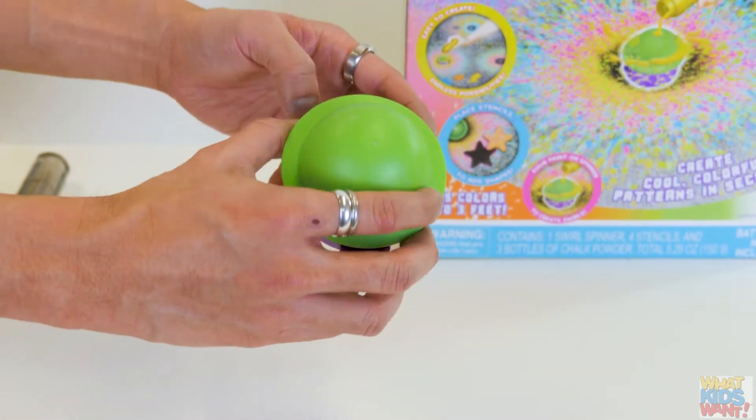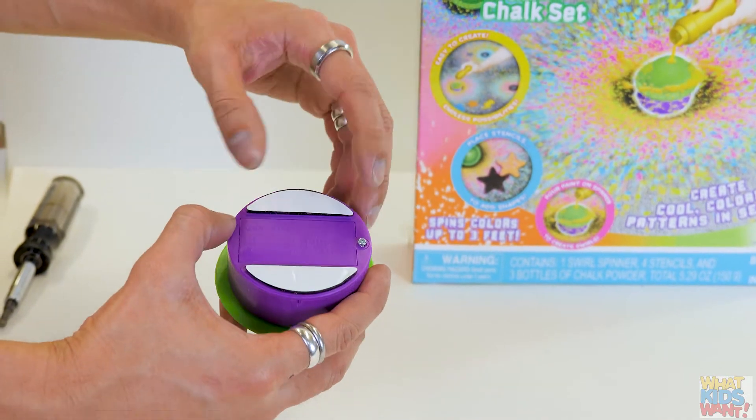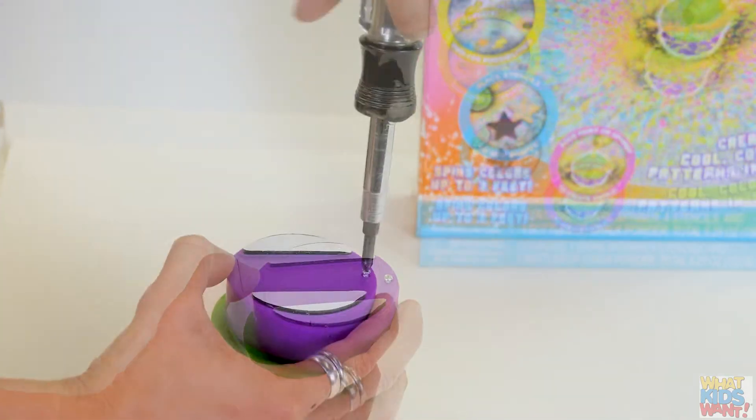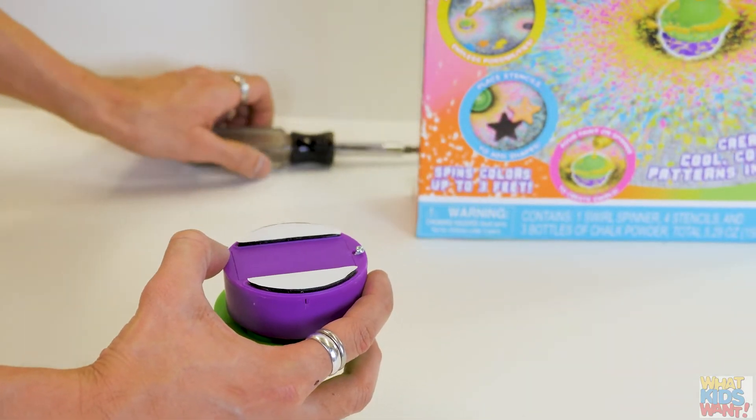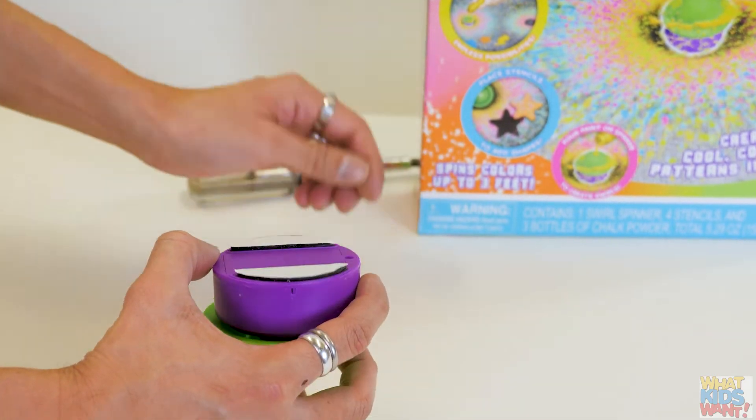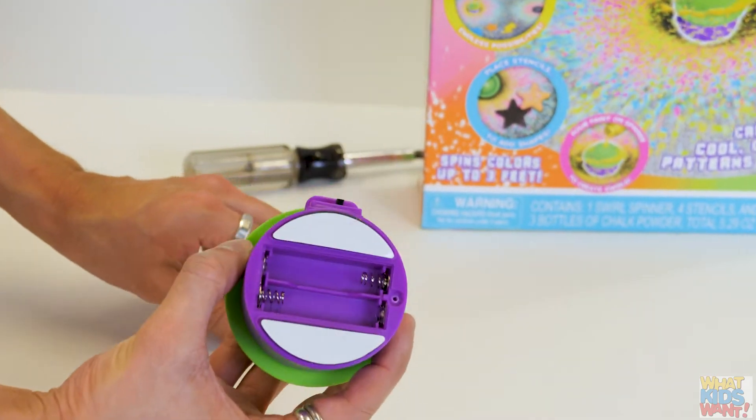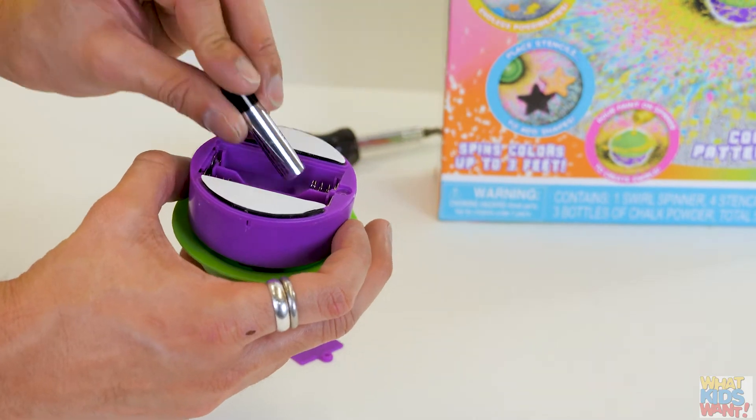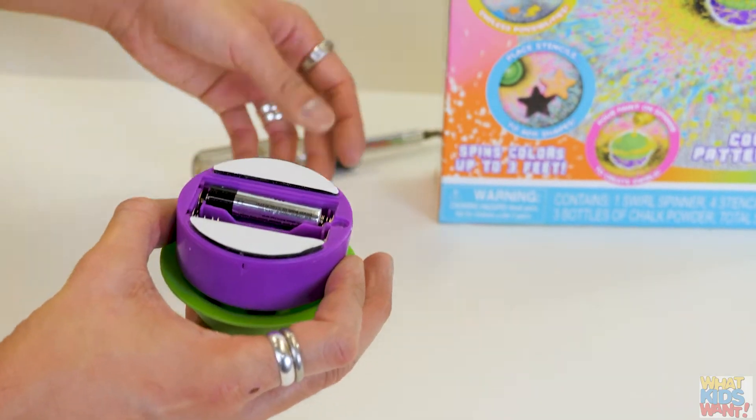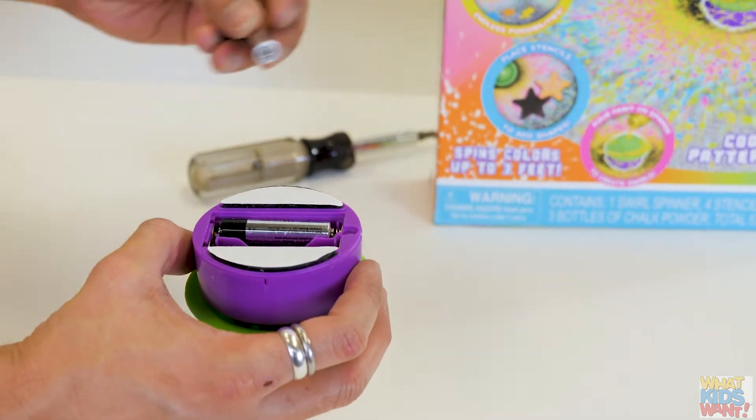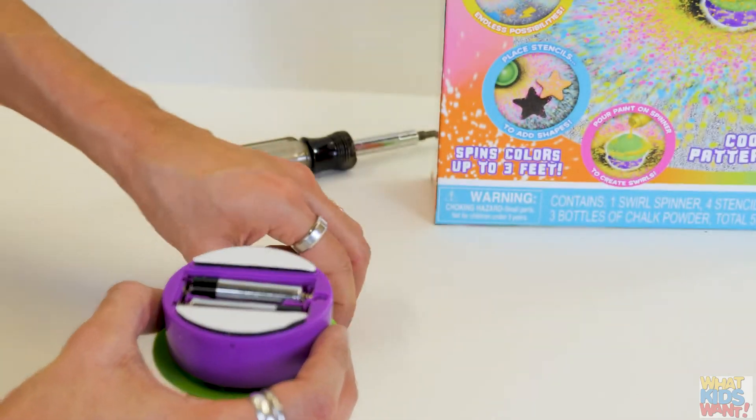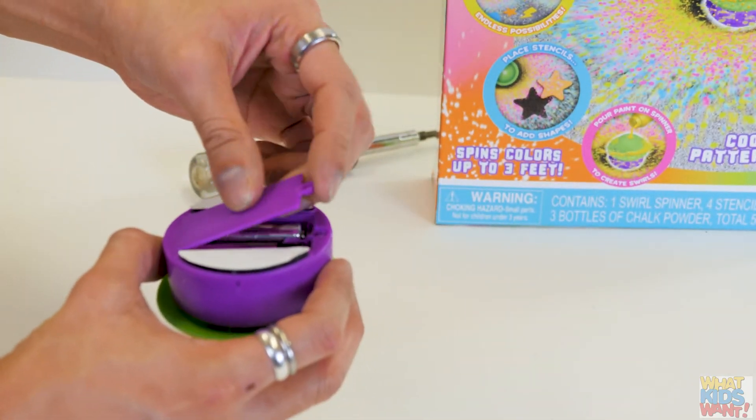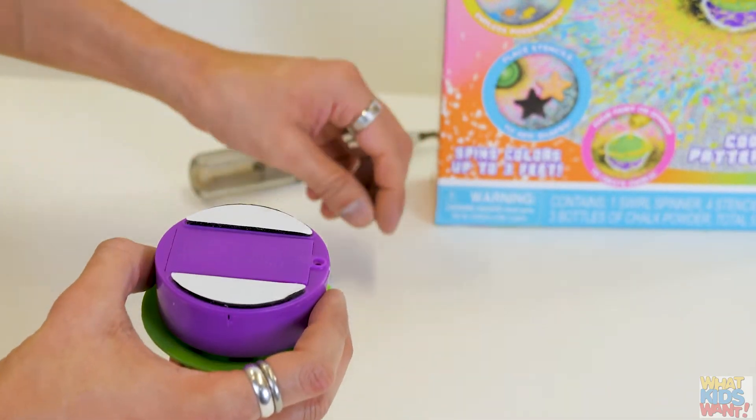To place batteries in the chalk spinner unit, using a screwdriver, unscrew the two sides of the battery compartment. Insert two AAA batteries. Replace the battery cover and tighten the screws.